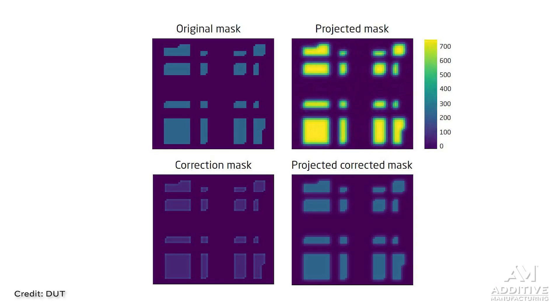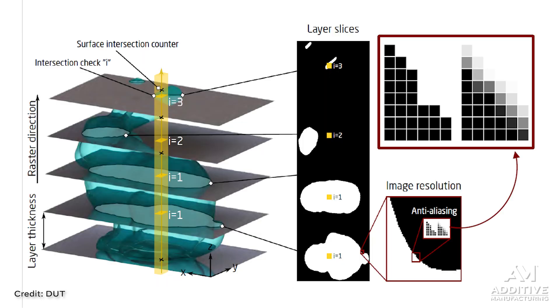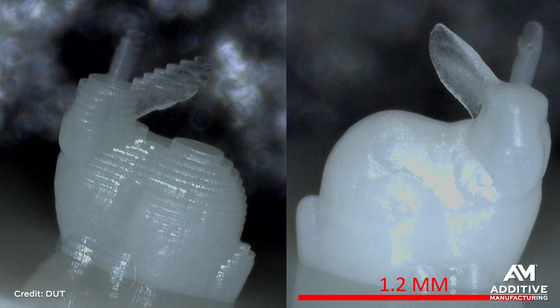Material curing is a function of both the intensity of the light and its duration, and so you can create different effects by playing with those two variables — for instance, maybe pulsing the light on and off in particular pixels. DTU has done some work on this. They figured out ways of doing grayscale, partially curing different pixels using diffused light, so they're able to do things like smooth out stair stepping by partially curing the pixels that are sitting in the corners.